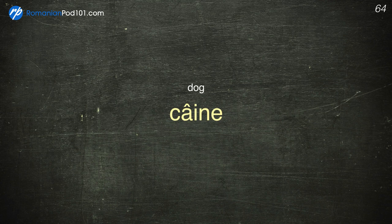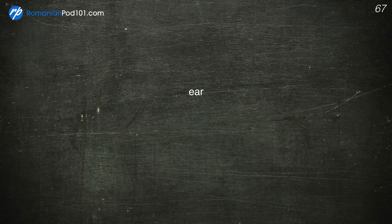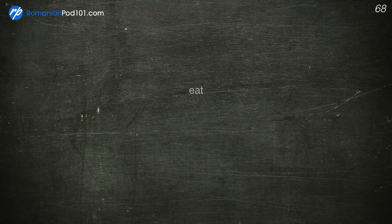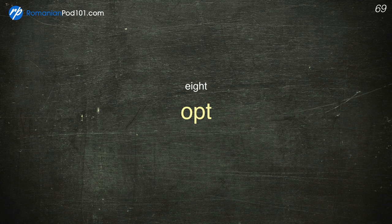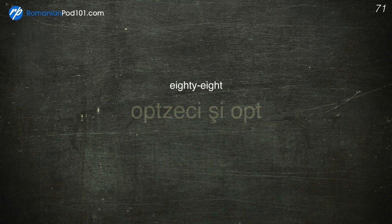Dog — Câine. Dress — Rochie. Drink — A bea. Ear — Ureche. Eat — A mânca. Eight — Opt. Eighteen — Optsprezece.